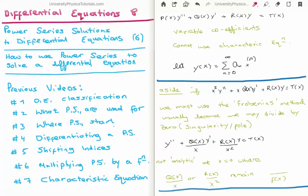Consider the differential equation written on the top right of your screen. This equation has the variable coefficient p(x) multiplied by the second derivative of y, plus the variable coefficient q(x) multiplied by the first derivative, the variable coefficient r(x) multiplied by the zeroth derivative, and is equal to another variable coefficient t(x). Notice that it's a non-homogeneous equation with variable coefficients, which means we cannot use the method of the characteristic equation but must instead use the method of power series solutions.